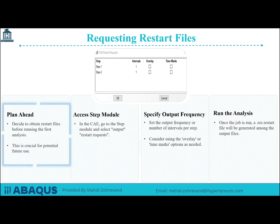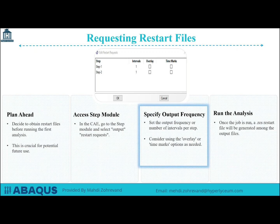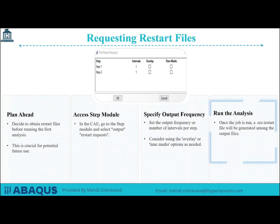To request restart files, planning ahead is crucial. You need to decide to obtain restart files before running the first analysis. In the CAE, go to the step module, select Output, and then Restart Requests. Here, you can set the output frequency or the number of intervals per step. You might consider using the overlay or time marks options as needed. Once the job is run, a .res restart file will be generated among the output files.